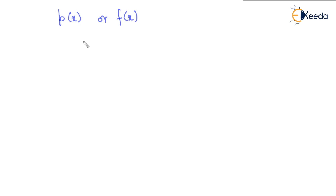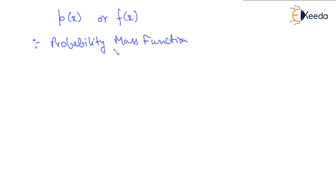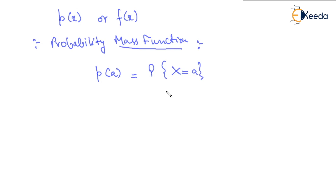From the same concept, we define probability mass function. This is defined for discrete random variable only — not for continuous random variable. Generally P is denoted for discrete and F for continuous, but either can be used. So P of A is given as the probability that X will take value A. This probability mass function gives P of A as the probability that X will take that value A.